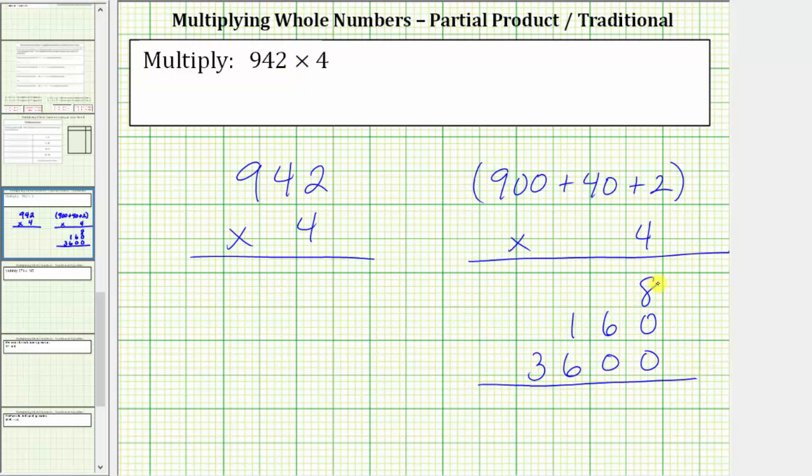Beginning in the ones place value, we have eight. The tens place value, we have six. In the hundreds place value, we have one plus six, which is seven. And we have a three in the thousands place value. The product is 3,768.